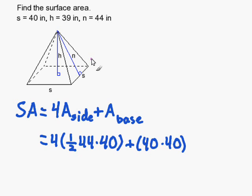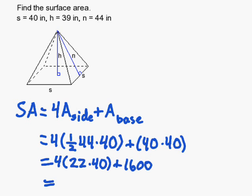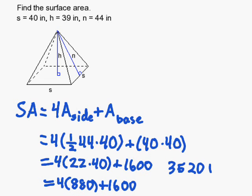Now I'm going to do the math a little quickly and get 22 times 40 is 880, times 4 is 3,520, plus 1,600. And my final answer is 5,120 inches squared.